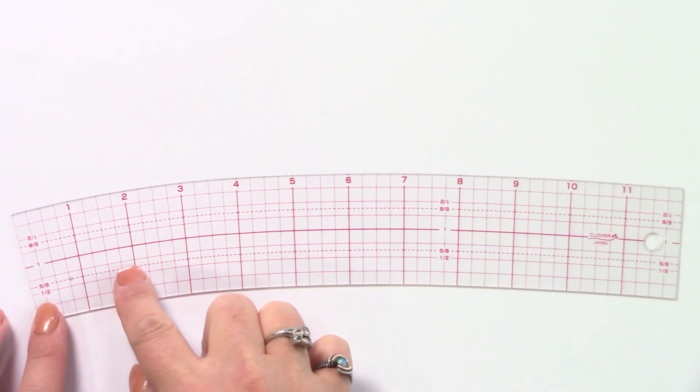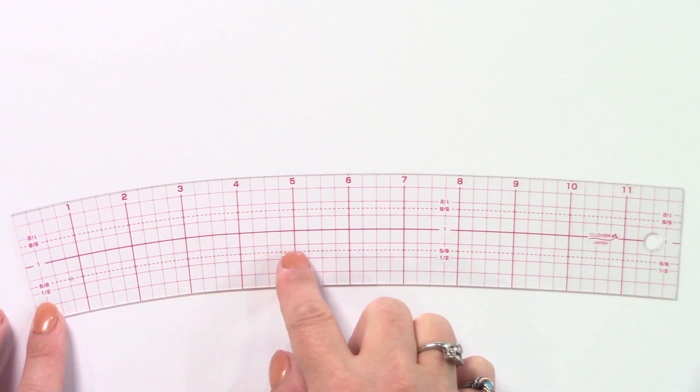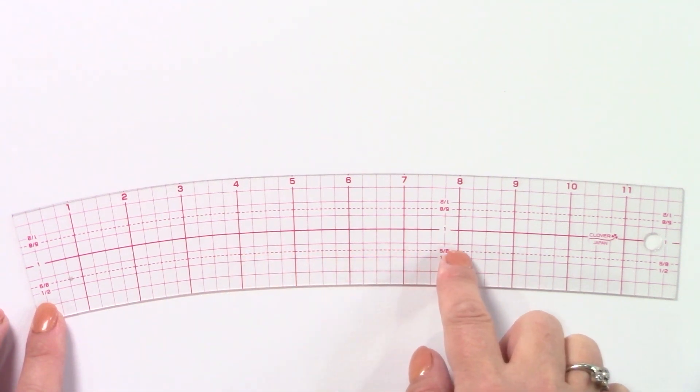The larger curved rulers also include a dotted 5/8 inch line, especially for marking traditional seam allowances.